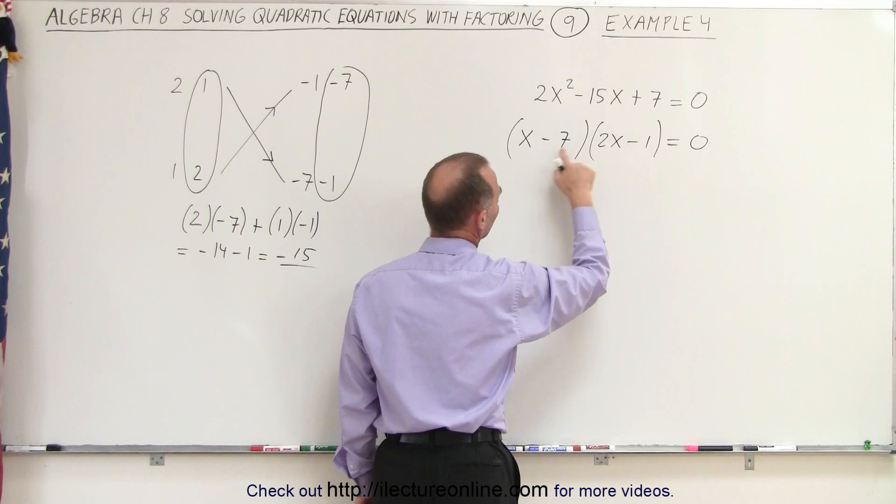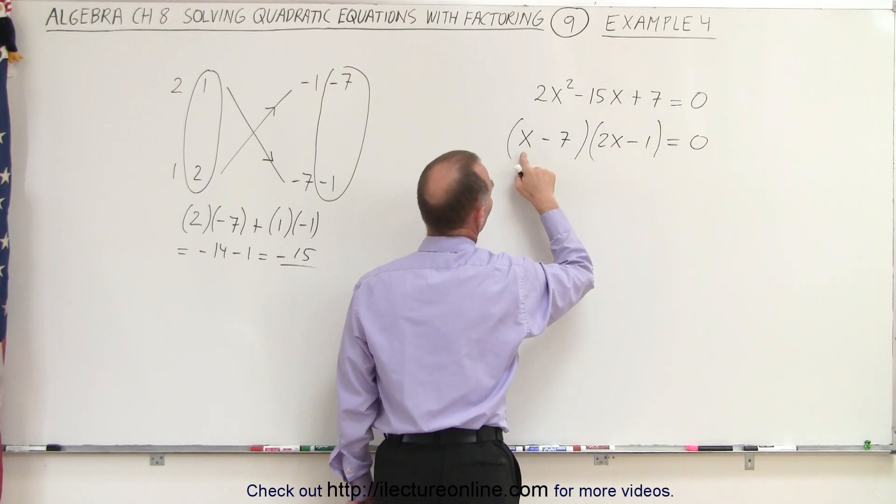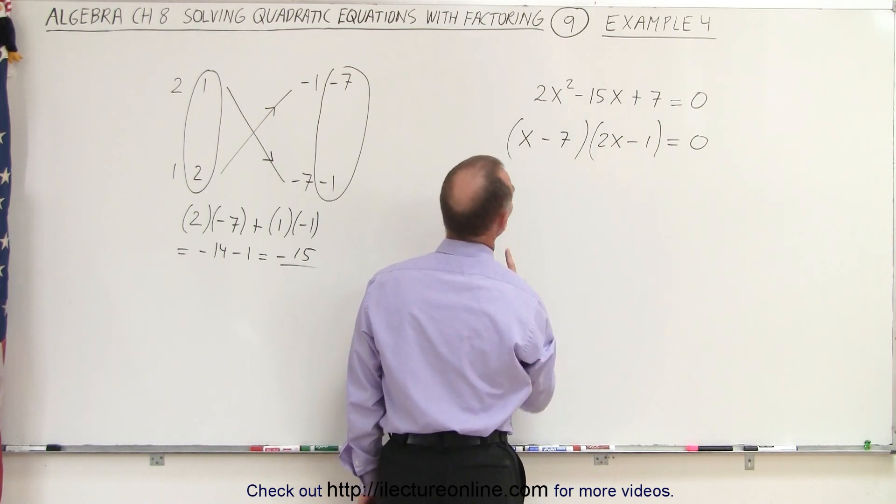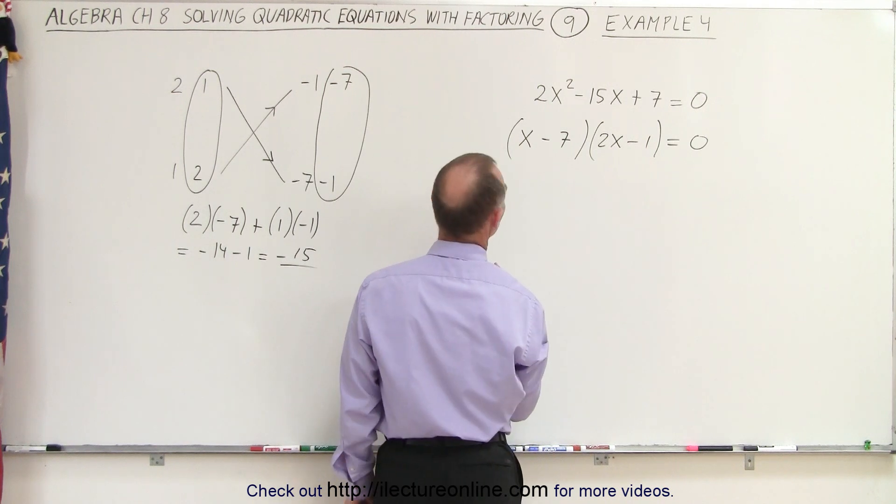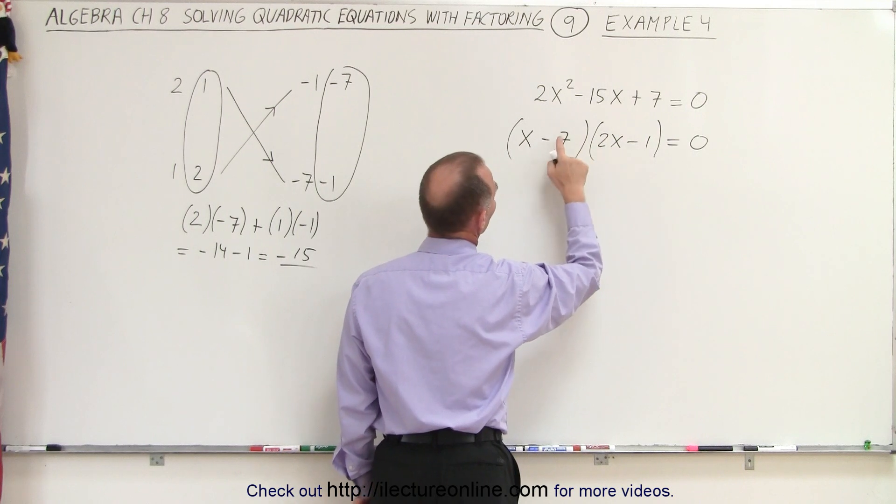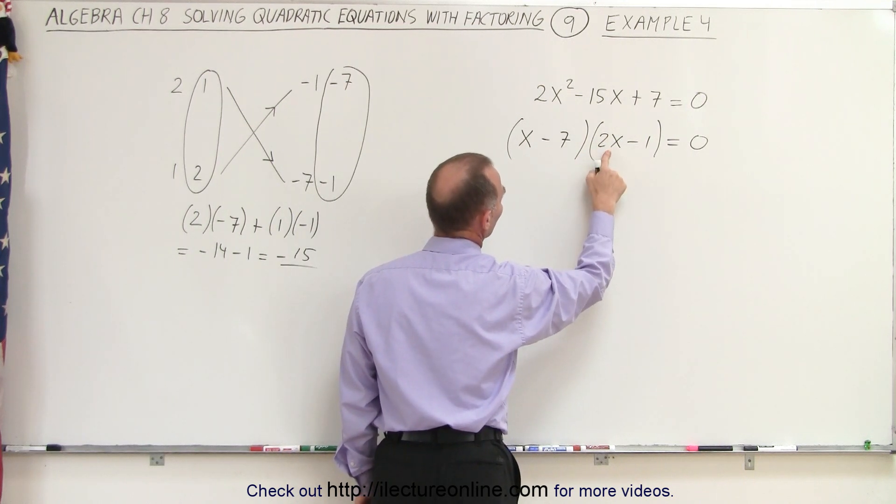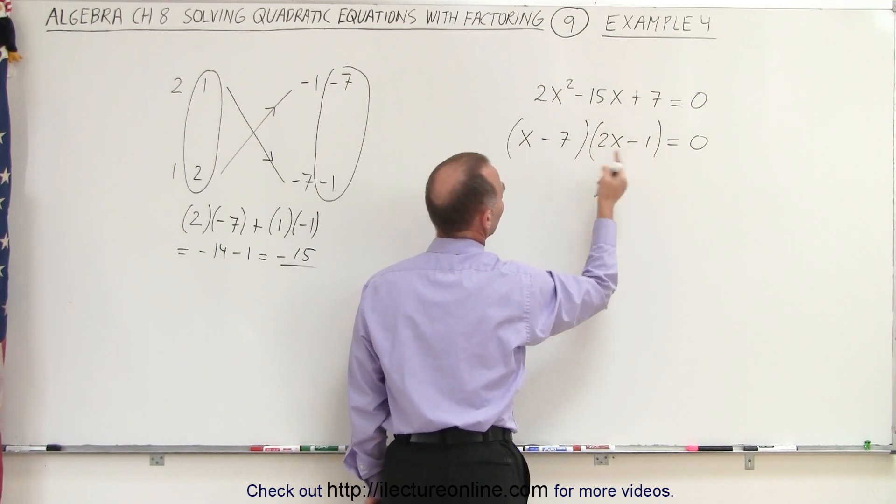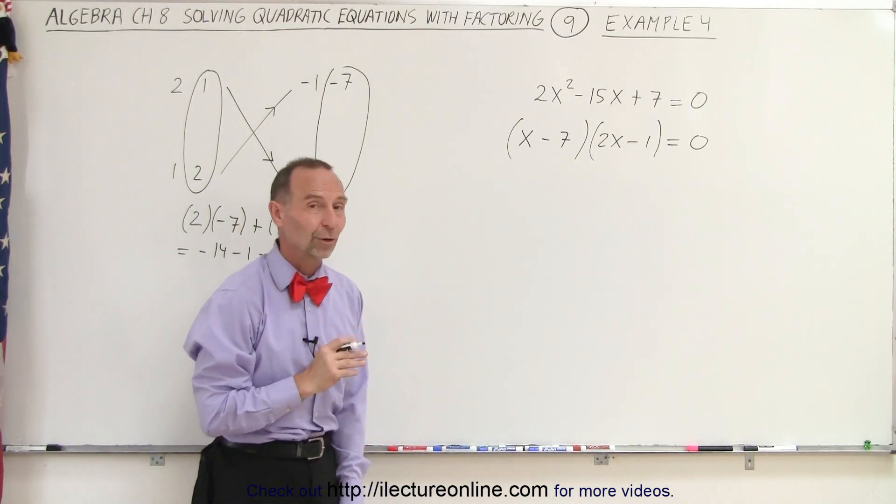And notice when I multiply these two together, I get a positive 7. x times... something is not right here. Oh, no, it is right. So x times negative 1 is negative x. Negative 7 times positive 2 is negative 14. That gives us negative 15. And yes, that looks like it's correct.